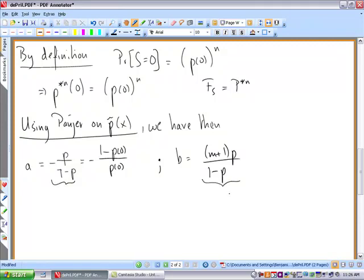Here these two expressions are expressed in function of the usual parameters of a binomial. And now I replace m is n, so we have n plus one times one minus p of zero over p of zero.